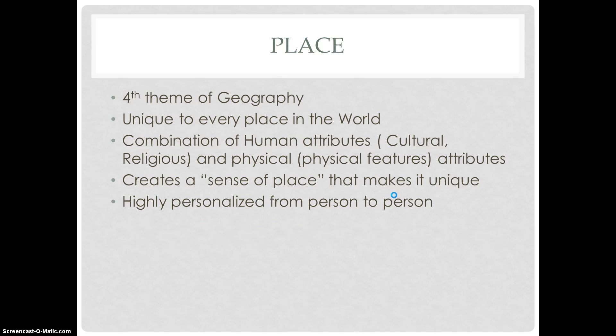The fourth theme of human geography is place. Place is unique to every location in the world — it is a combination of human attributes, cultural and religious attributes, and physical attributes such as physical features. Together these create a sense of place that makes it unique from other locations on Earth. It is highly personalized from person to person.